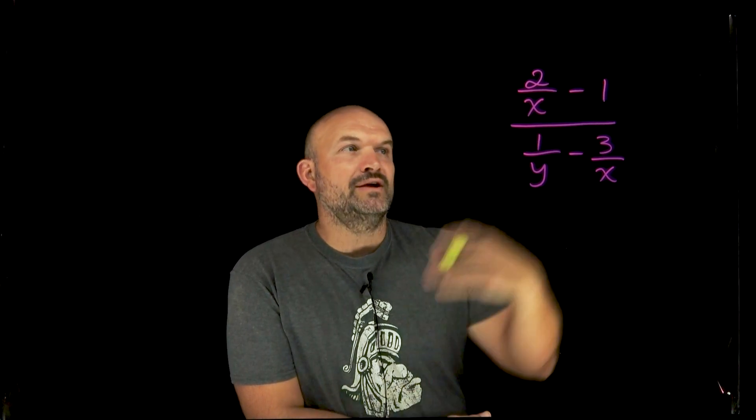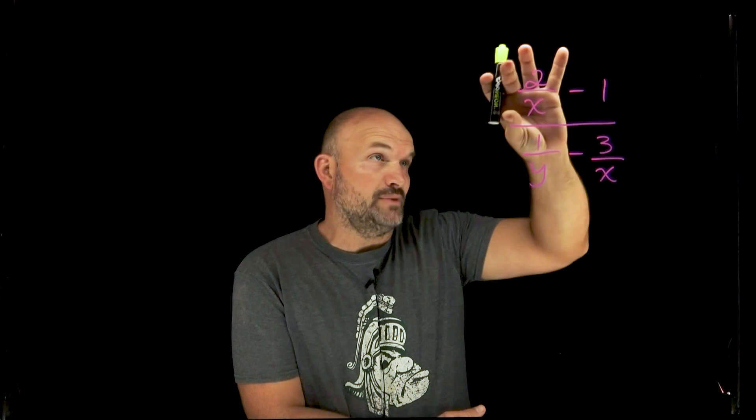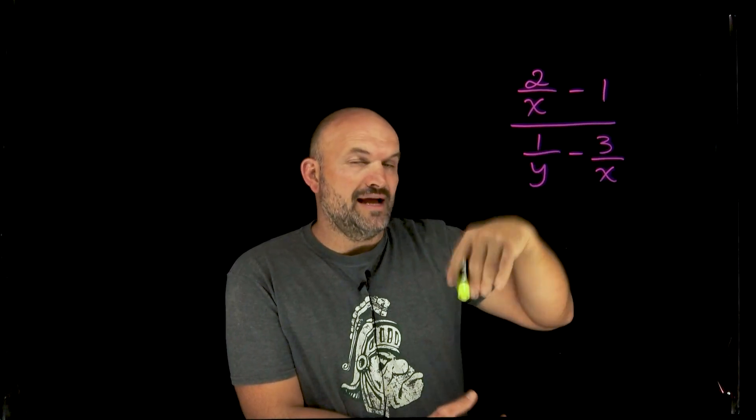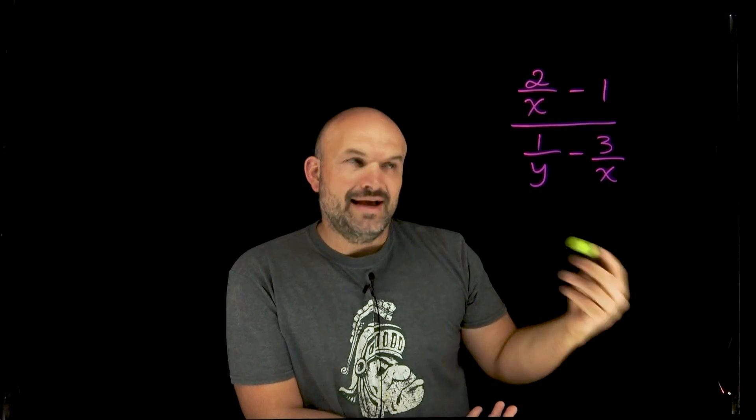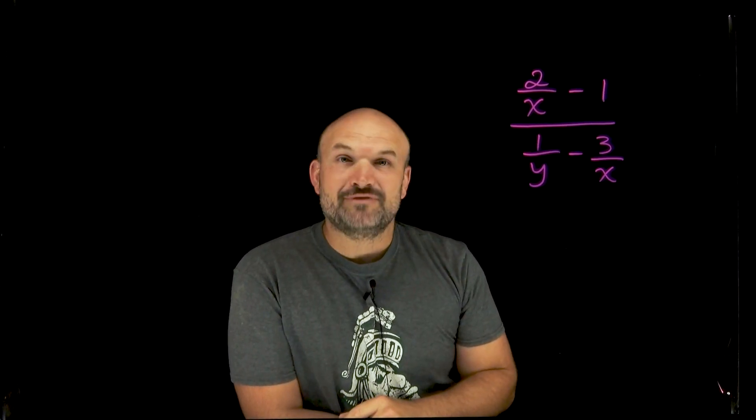So what I want you to recognize here is I have a big fraction. I have a numerator up here, denominator down here. And within that numerator and denominator, I have more fractions: 2 over x, 1 over y, 3 over x, and that hence comes the name complex fractions. We just have a lot of fractions.